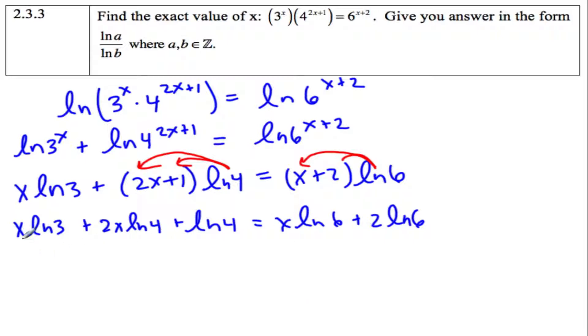And now, this has an x, this has an x, and this has an x, this one doesn't, and this one doesn't. So everything with an x will come to the left, everything without an x will go to the right.